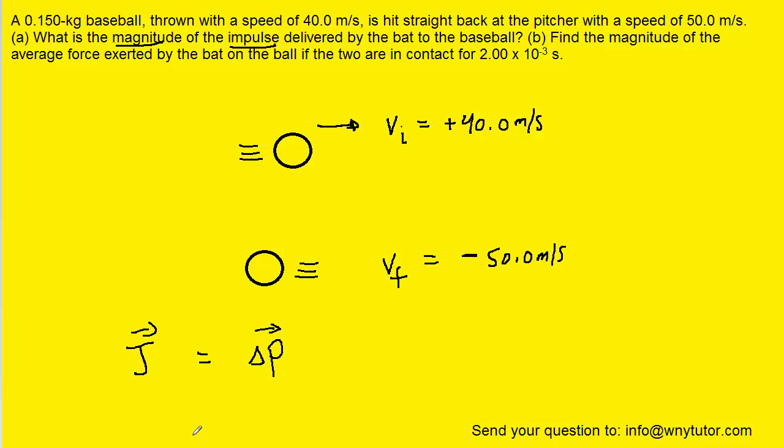We can use the symbol delta p to represent the change in momentum, but in fact the change in momentum can be rewritten. Since momentum is equal to mass times velocity, we can write the change in momentum as mass times the final velocity minus mass times the initial velocity.